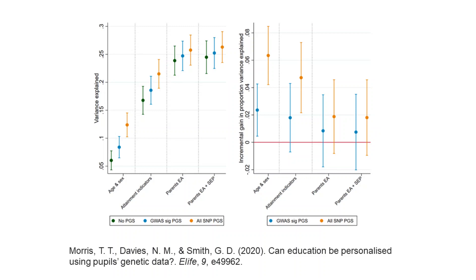Polygenic scores which predict educational attainment serve as a control to help us decipher how much, if any, of the correlation between books in the house and school results are actually caused by the books.